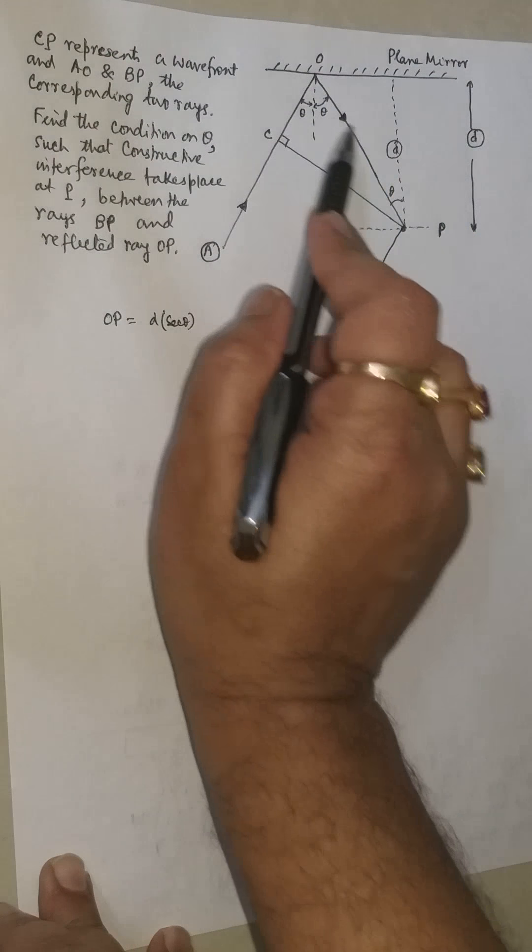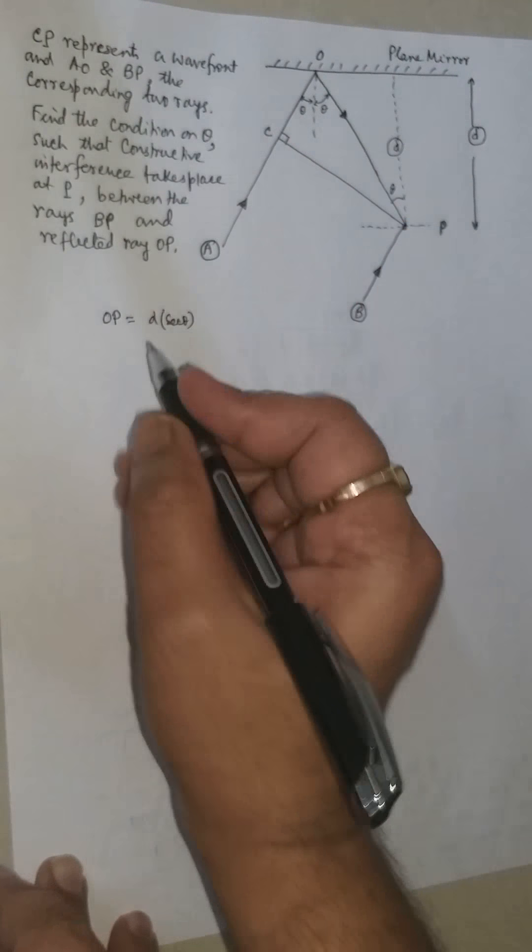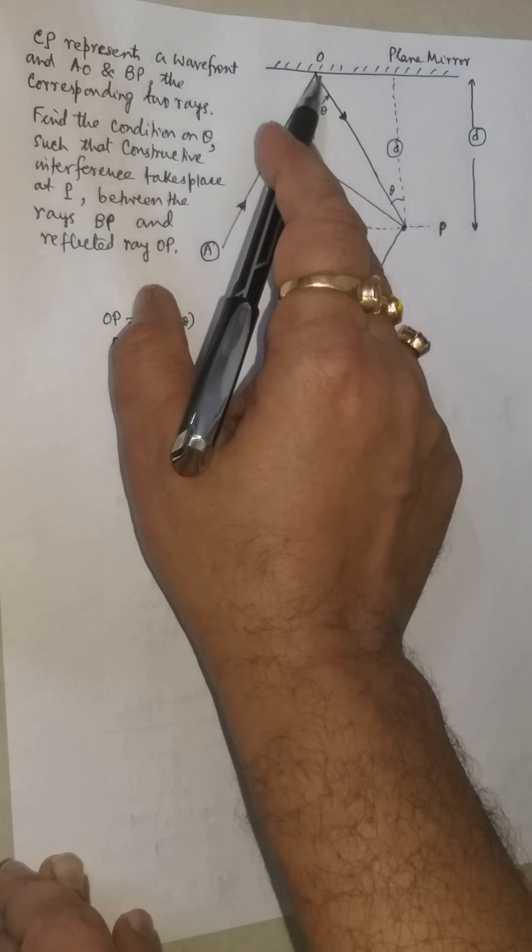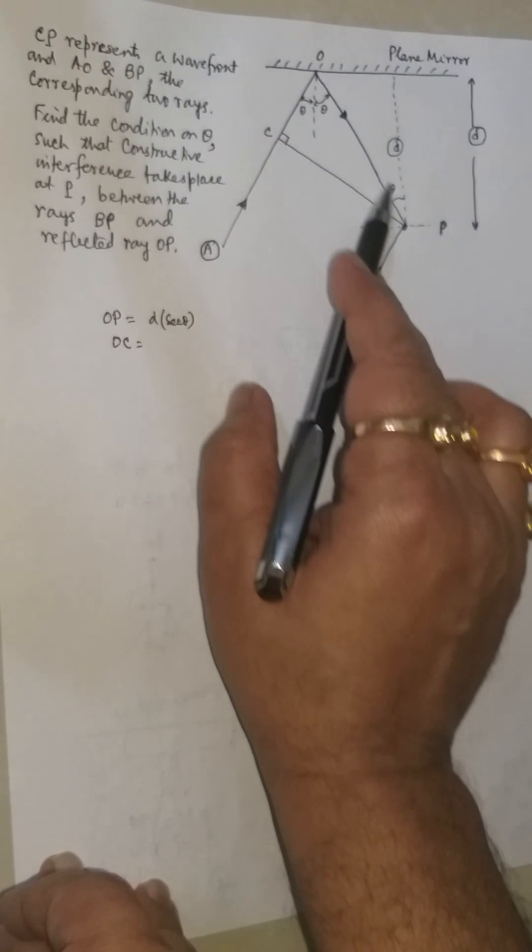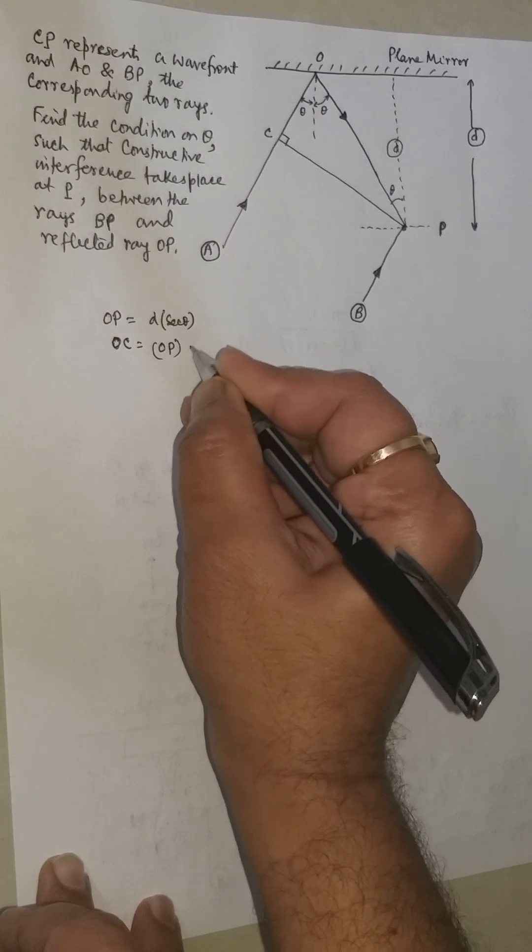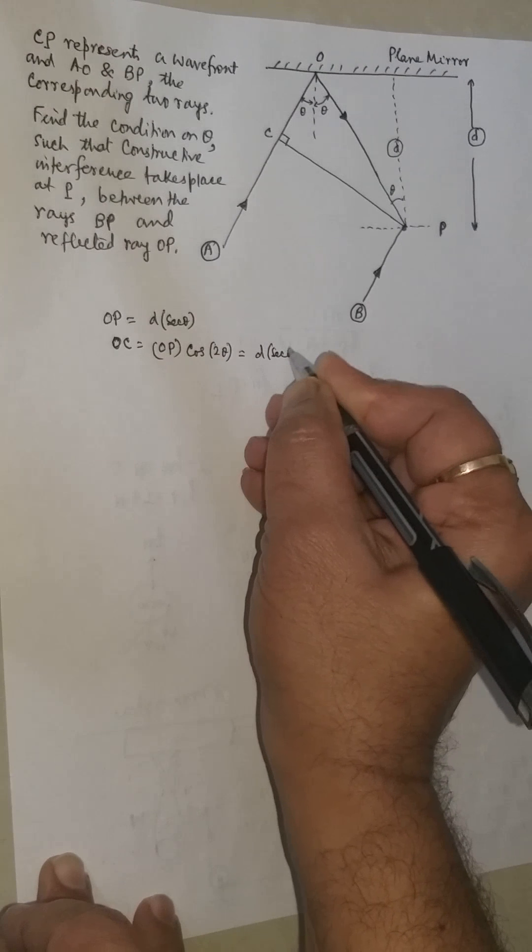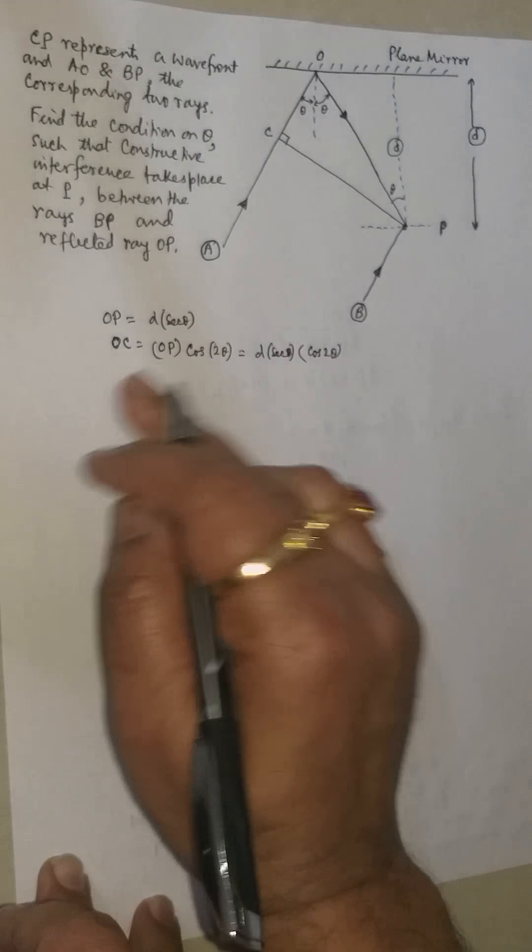Now in this triangle, once OP is calculated, let us calculate OC. Here this angle is 2 theta and OP is known. Therefore, OC by OP is equal to cos 2 theta. So OC will be equal to OP multiplied by cos 2 theta, that is D sec theta times cos 2 theta. This is OC.